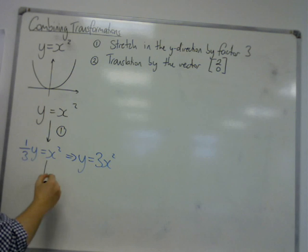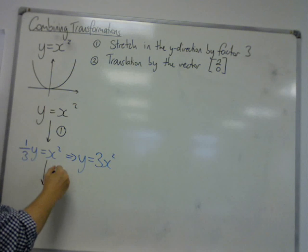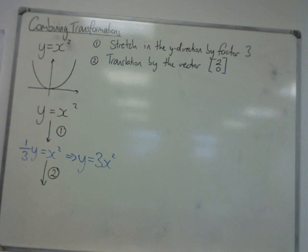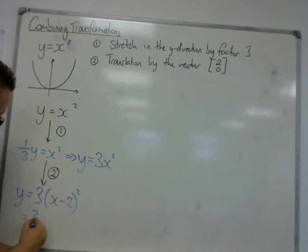And then we're going to apply the second transformation, number 2, this translation by the vector [2, 0]. So x gets replaced with x minus 2. So if I were to multiply this out, we would get 3x squared minus 12x plus 12.